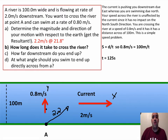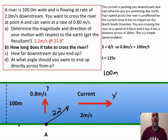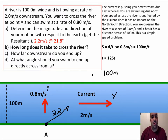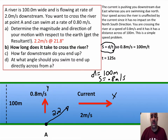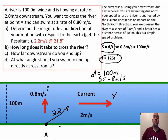If we consider just the Y direction and ignore the current, you're crossing at 0.8 meters per second — this makes the problem really easy. You need to travel 100 meters in the Y direction at 0.8 meters per second. Using the speed formula — speed equals distance over time — we rearrange to solve for time: distance is 100 meters, speed is 0.8 m/s, so it takes you 125 seconds to cross the river.